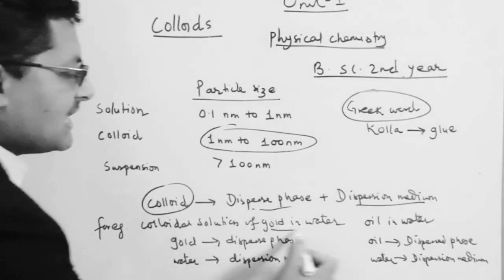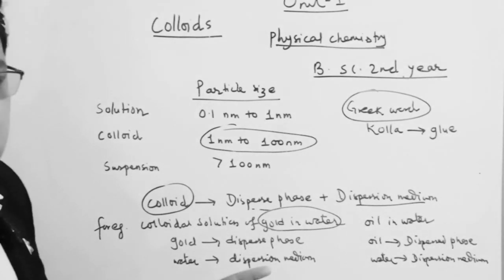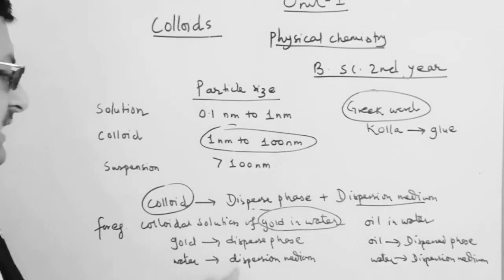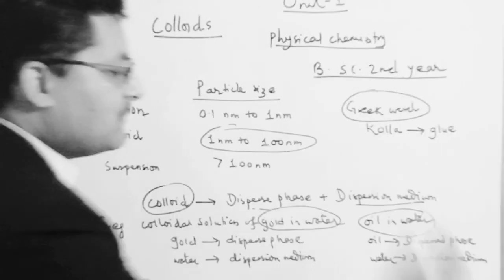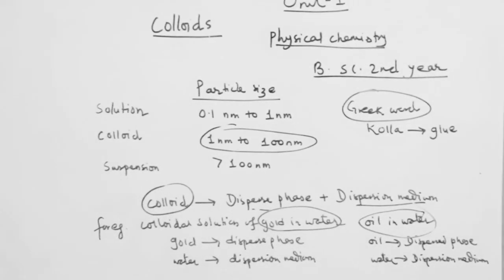There is a solution in the world of colloid. One component is called the dispersed phase and the other is called the dispersion medium. For example, oil in water — oil is the dispersed phase. We also have gold in water as an example of a colloid.